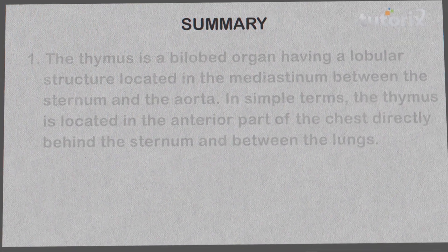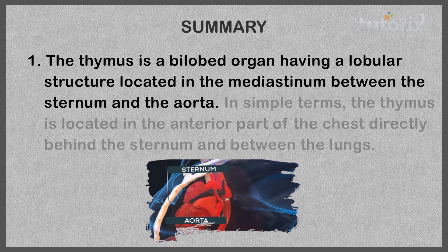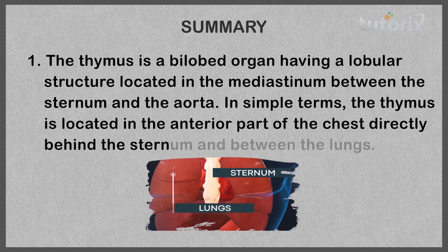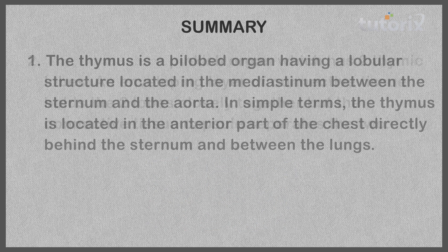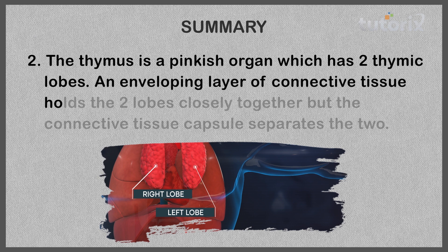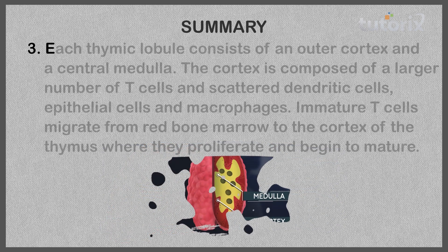The thymus is a bilobed organ with lobular structure, located in the mediastinum between the sternum and the aorta — in simple terms, in the anterior part of the chest directly behind the sternum and between the lungs. The thymus is a pinkish organ whose two thymic lobes are held closely together by an enveloping layer of connective tissue, while a connective tissue capsule separates the two lobes.